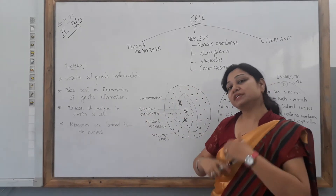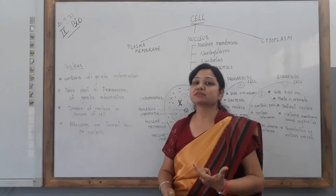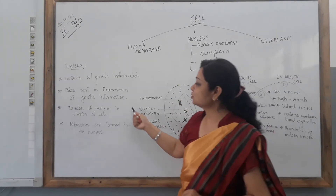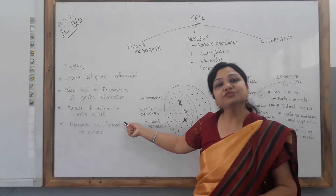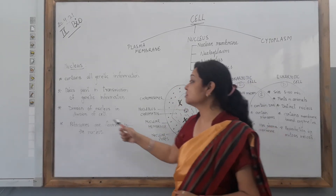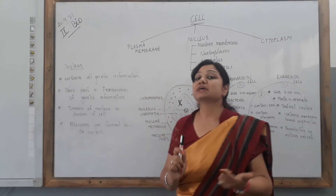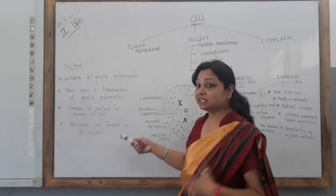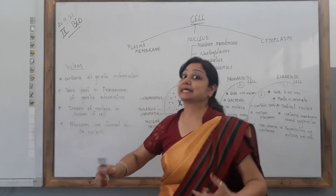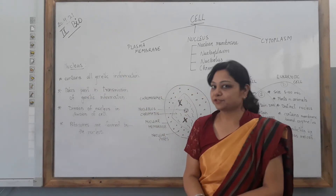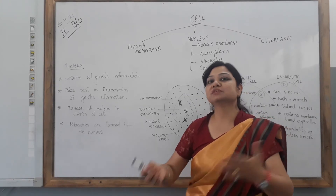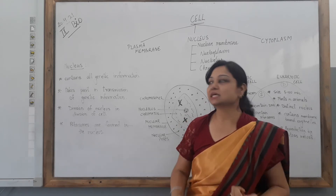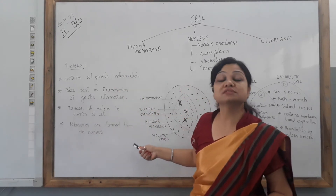Next, the division of the nucleus — whenever a cell divides, as in unicellular organisms like amoeba, the nucleus always divides too. So in cell division, there is also a division of the nucleus. Then, a very important function: ribosomes are formed in the nucleus. Ribosomes are essential for protein synthesis. So you can see how many important functions the nucleus holds — just like the prime minister, the CEO, or the vice principal holding all the important responsibilities.